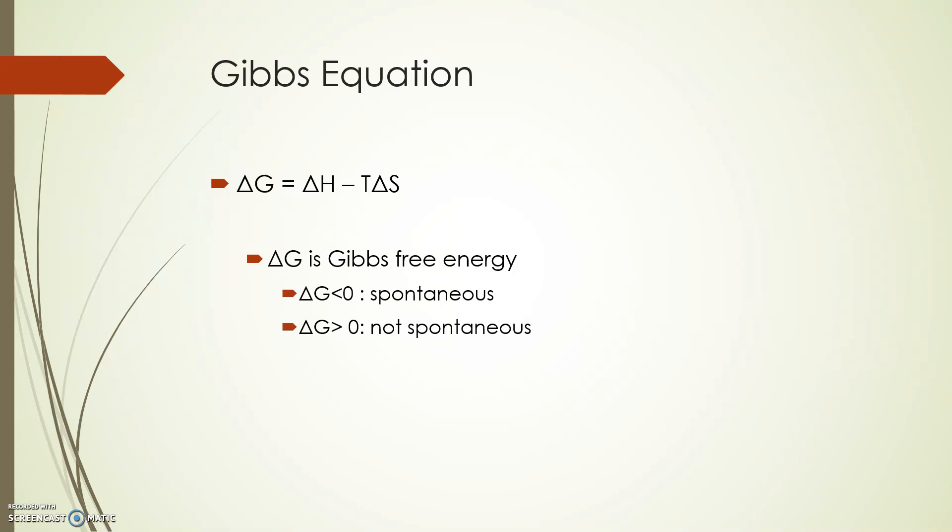This is a measure of the free energy of a process. It deals with how a process can require energy or release energy, along with the spontaneity of the process. If delta G is less than zero for a process, meaning a negative value, the process is spontaneous. If delta G is greater than zero, meaning a positive value, that means the process is not spontaneous.